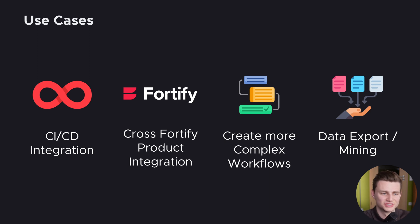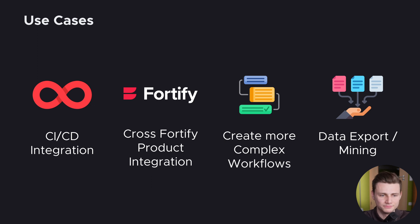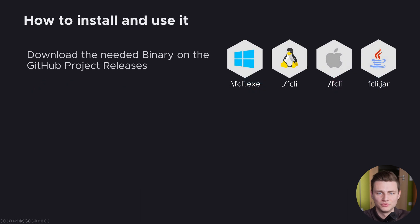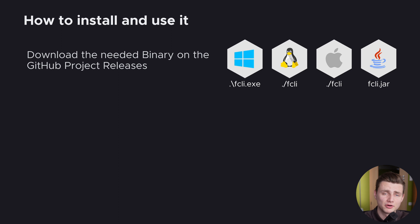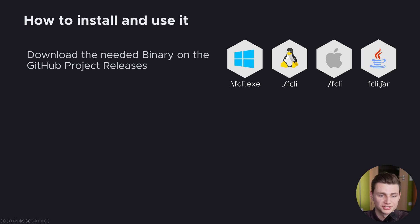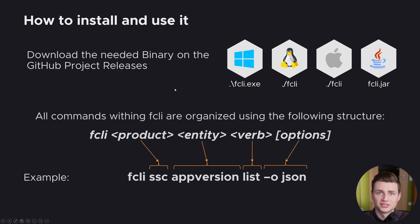These are just example use cases — there are more, and we will cover them in upcoming videos. Now, how can you download and use FCLI? It is very easy: go to the GitHub project linked in the video description, look at the available releases, and download the binary you need — for Windows, Linux, Mac, or just the JAR file. That's the first step, and then you can start using it.